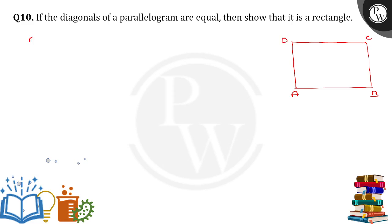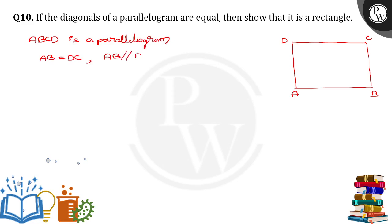So if ABCD is a parallelogram, what we know about a parallelogram is that opposite pairs of sides are equal and parallel, which means AB is equal to DC and AB is also parallel to DC. Next, AD is equal to BC and AD is parallel to BC.